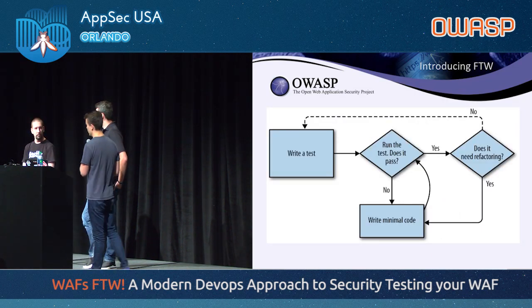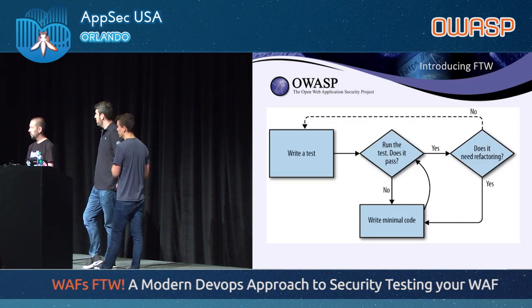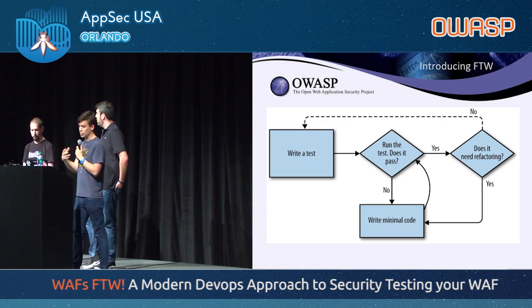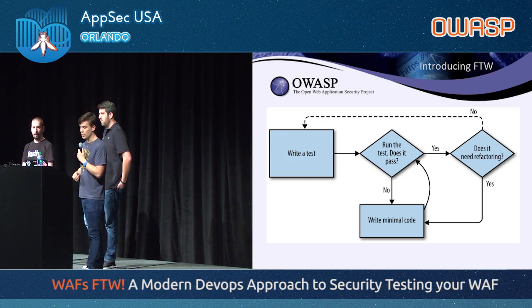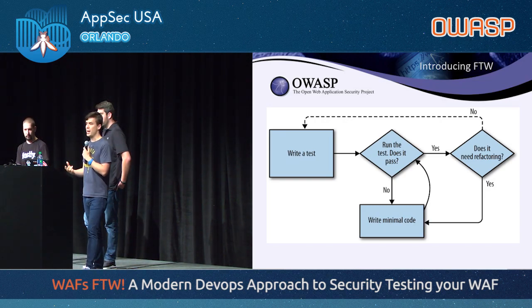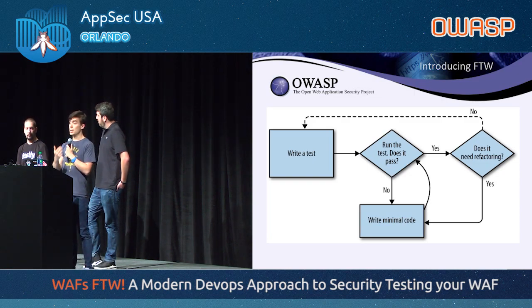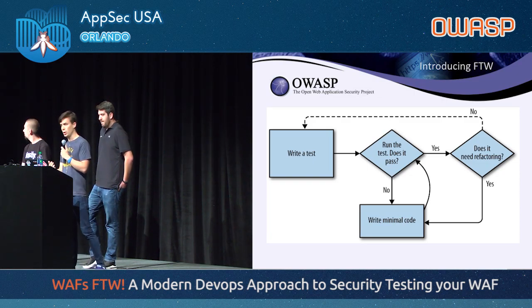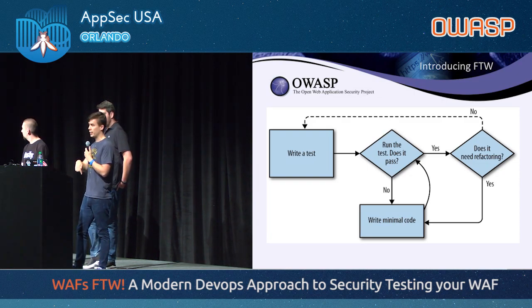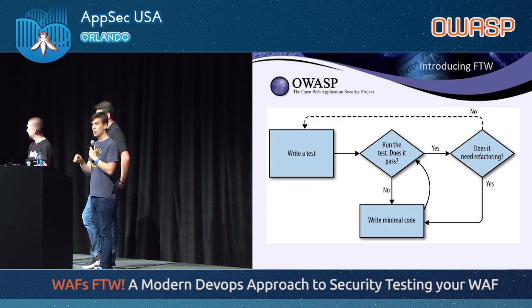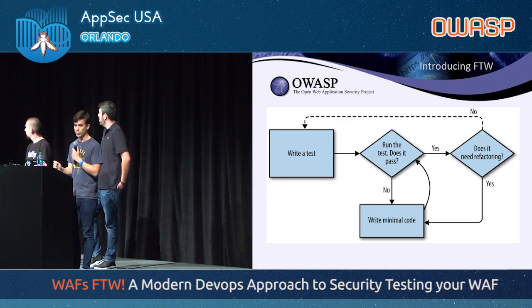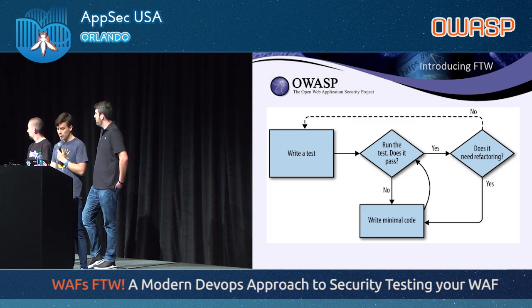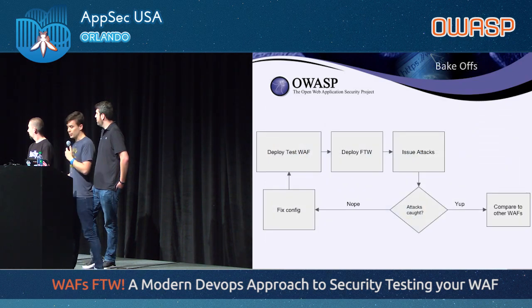FTW stands for the Framework for Testing WAFs — not just 'for the win.' It is a Python project that heavily uses the PyTest framework, which is a unit testing, integration testing, and regression testing software framework. We wanted to integrate security testing and web attacks into Python so that when it's run, it fails unit and integration tests just like any other piece of software. You take a test case in PyTest — which is just a web application attack, anything from cross-site scripting to SQL injection — define the attack as a fixture, then test it against whatever system you want. That test suite becomes a comprehensive baseline corpus of attacks to issue against the WAFs you're evaluating.